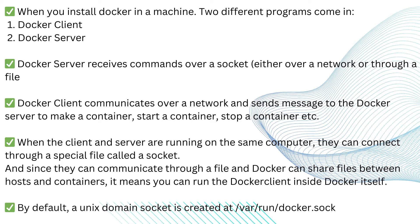When you install Docker on a machine, two different programs come with it: the Docker client and the Docker server. The Docker server receives commands through a socket — either over a network or through a file. The client communicates over the network and sends messages to the Docker server to create, start, or stop containers. When the client and server are running on the same computer, they connect through a special file called a socket.